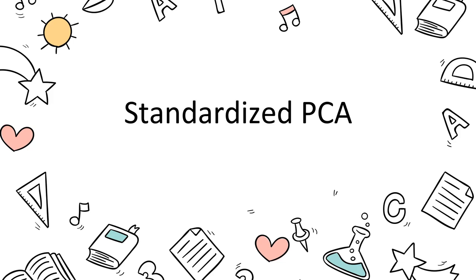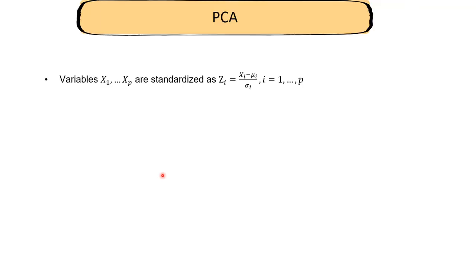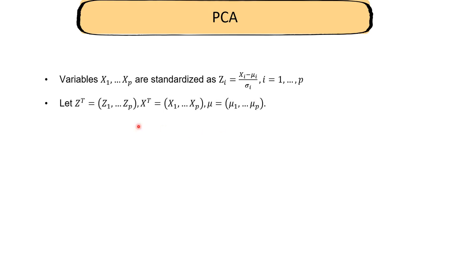Welcome back. In this video we'll take a look at how to do PCA on a standardized dataset. We have variables x1 through xp, and z1 is a standardized version of x1, where z1 equals x1 minus mu1 divided by sigma1. To standardize a variable we subtract its mean and divide by the standard deviation. All z variables are collected in vector z, x variables in vector x.